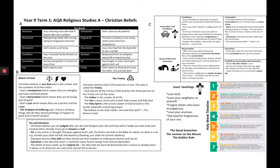The first topic that you'll be studying in RE GCSE, which everyone is studying, is a unit called Christian Beliefs — you need to know Christian Beliefs and Practices. You will then study Islamic Beliefs and Practices, and you'll also study four thematic topics: War and Peace, Crime and Punishment, Life After Death, and Justice and Human Rights.